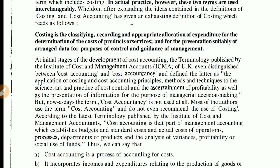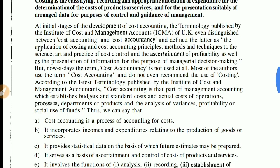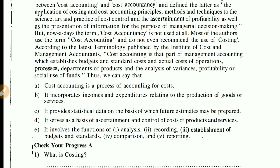Cost accounting is a process of accounting for cost in which we try to identify the cost. It incorporates income and expenditures relating to the production of goods and services — it analyzes and writes down whatever is related to production. It also provides statistical data on the basis of which future estimates may be prepared, helping you determine what can happen in the future.